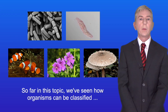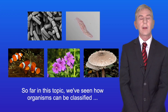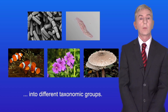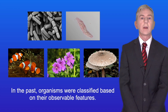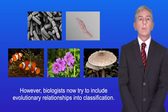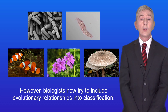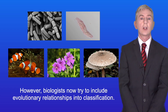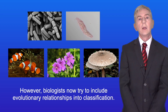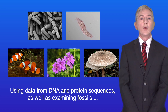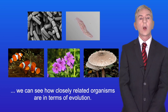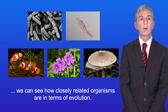So far on this topic, we've seen how organisms can be classified into different taxonomic groups. In the past, organisms were classified based on their observable features. However, biologists now try to include evolutionary relationships into classification. Using data from DNA and protein sequences, as well as examining fossils, we can see how closely related organisms are in terms of evolution.